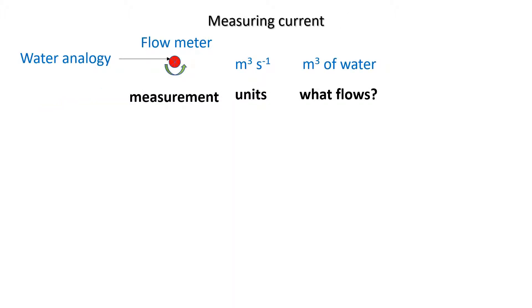What we're measuring in both the water analogy and in the electrical circuit is current. In the water analogy we measure the flow of water with a flow meter. This calculates how many meters cubed of water have flown through it and it divides that up into units of time, for example meters cubed per second.